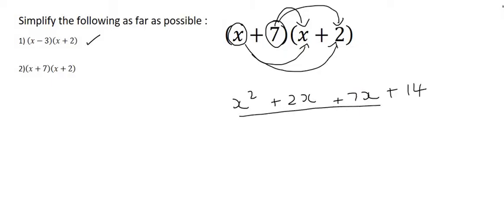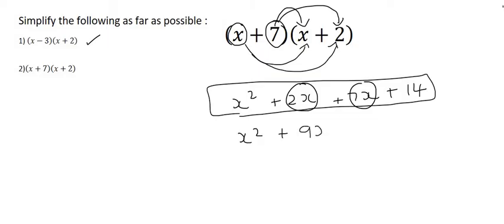Then what we do is we scan these four terms once again, and we put any like terms together, where here we have a 2x and a 7x, so 2x plus 7x is 9x plus 14.